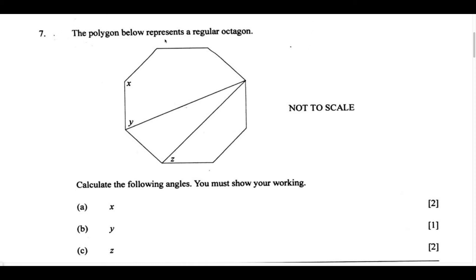The question says the polygon below represents a regular octagon. Let's begin. This word octagon tells us something unique about this figure. With an octagon, we know we're going to have 8 sides and 8 angles.